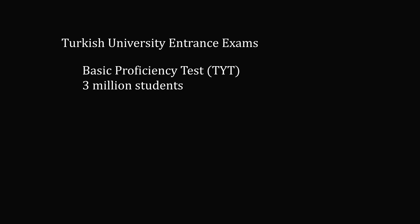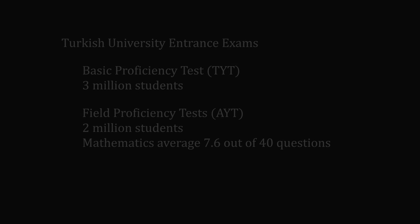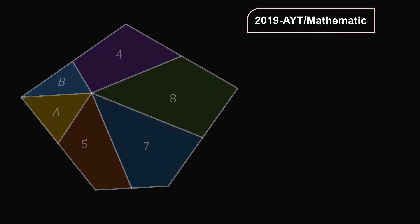Let's now go to the Turkish University entrance exam. About 3 million students take the basic proficiency test, the TYT, and about 2 million students take the field proficiency test, the AYT, in different subjects. The mathematics test is very difficult — it has an average score of about 7.6 out of 40 questions. So even solving one question seems very significant. Here's the problem from the 2019 AYT.